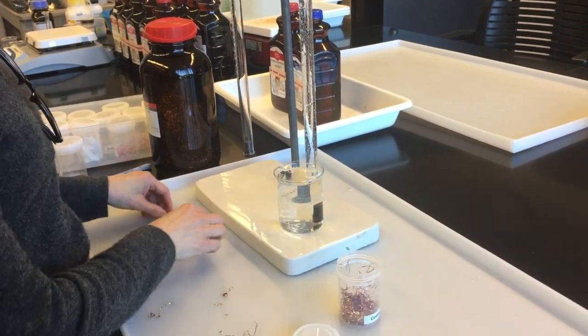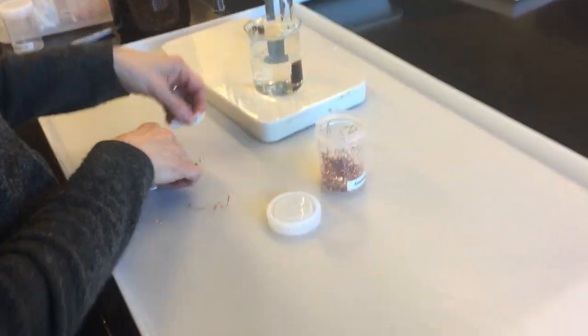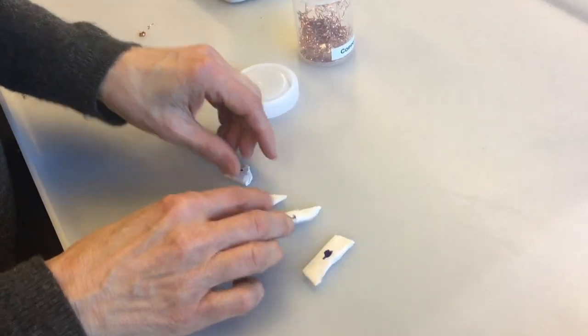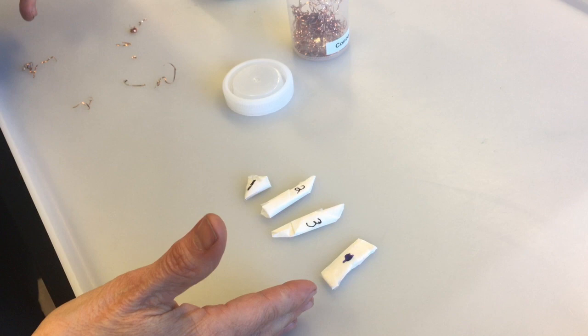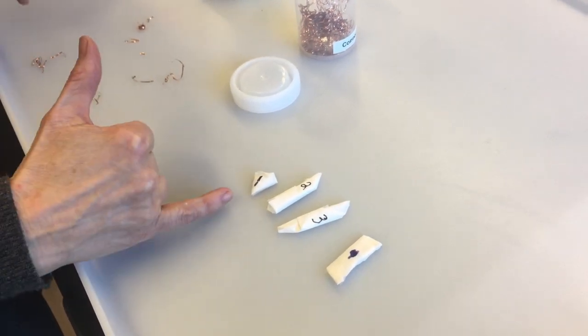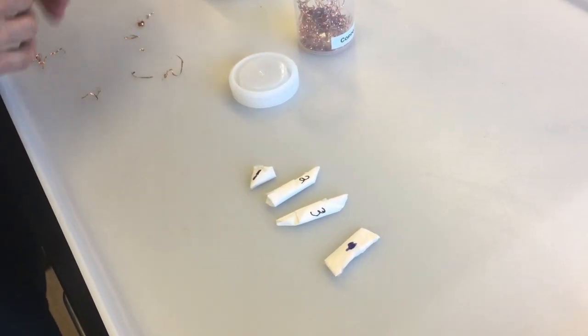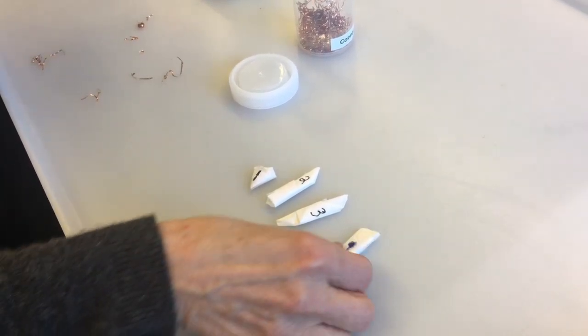First thing you have to do is pick a piece of magnesium from your table. Because the experiment is comparing the size of magnesium to the amount of hydrogen gas produced, there are four different sizes of magnesium at the table. So I'm going to pick the four.